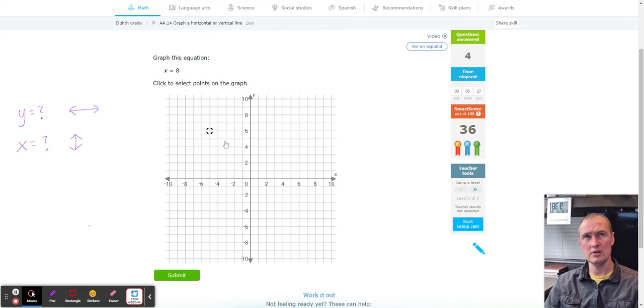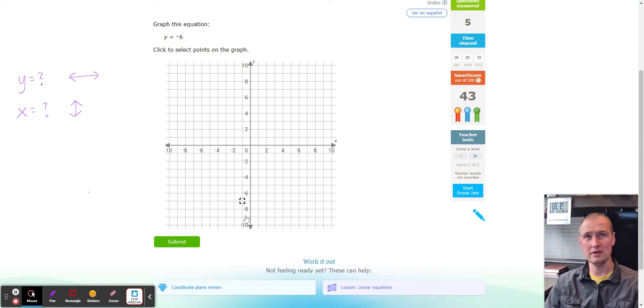And X equals positive eight. So go right. One, two, three, four, five, six, seven, eight lands right there. And again, it doesn't matter where you click as long as the line is perfectly straight up and down. Probably one of the easiest iExcels ever.